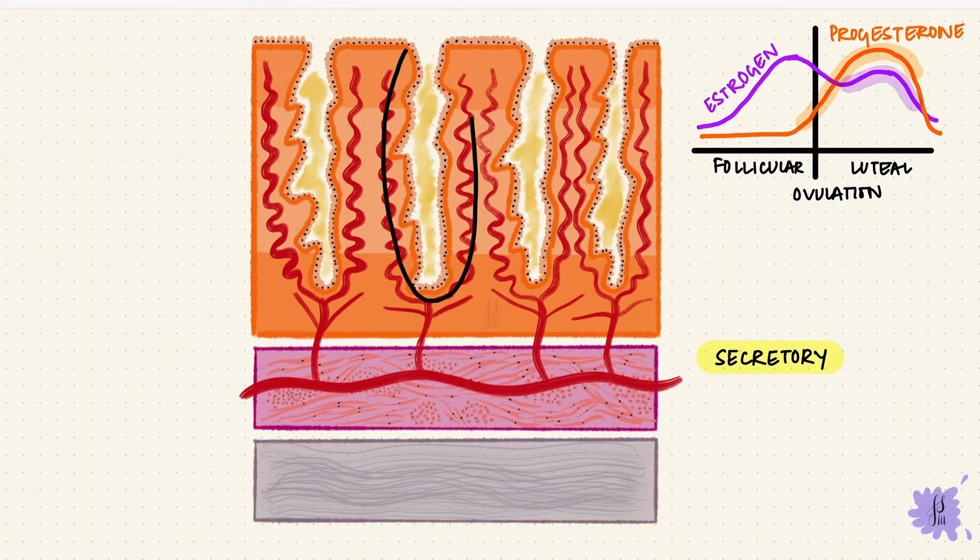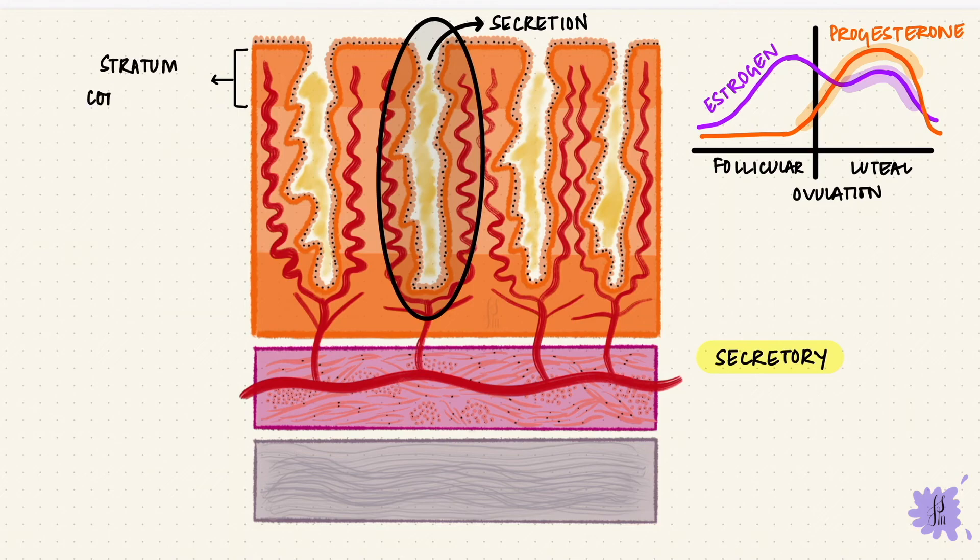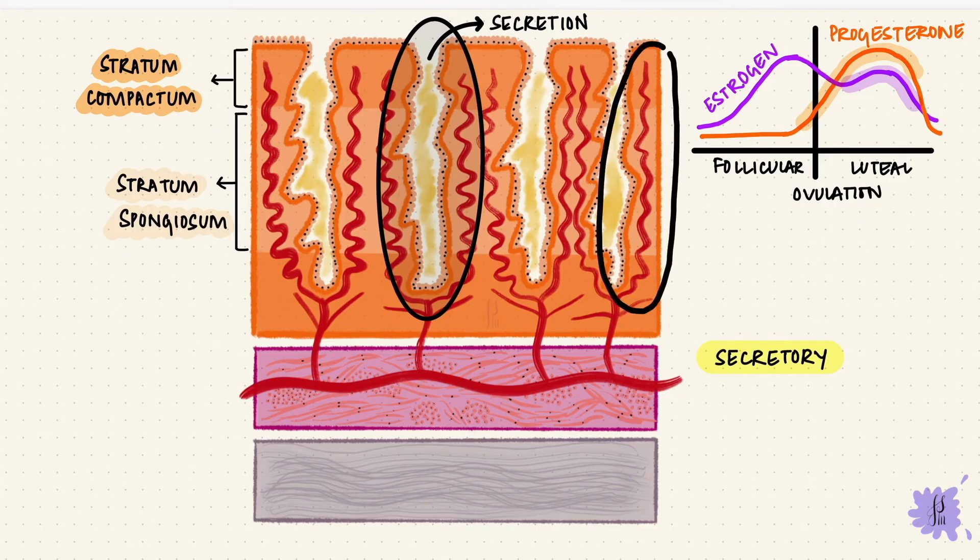The glands become wider, longer, and more tortuous. They get filled with secretions, which are nutritive, because remember, it's preparing for the blastocyst. It's got things like glycogen. The lamina propria in the upper part is compact, and it's called the stratum compactum. But below that, it becomes fluid-filled and edematous. This is the stratum spongiosum. And these are the two parts of the stratum functionalis, the stratum compactum and the stratum spongiosum. The spiral arteries reach higher in the endometrium. Their walls thicken, and they become more tortuous.